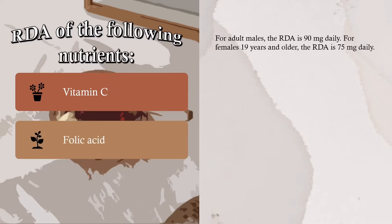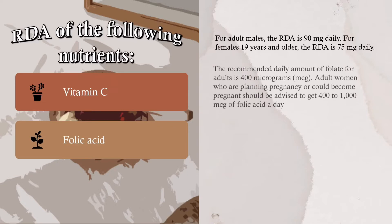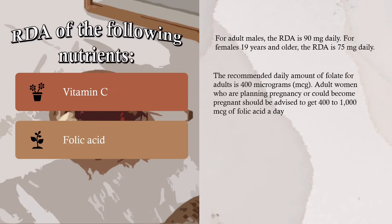Folic Acid: The recommended daily amount of folate for adults is 400 micrograms. Adult women who are planning pregnancy or could become pregnant should be advised to get 400 to 1,000 micrograms of folic acid a day.